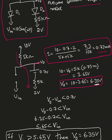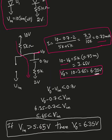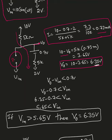Now I need to find the condition — at what input voltage I get this output. Since I assumed D1 is open, the anode voltage condition is: V_out minus V_n must be less than 0.7. Substituting V_out = 6.35 gives 5.65 must be less than V_n. So as long as V_n is greater than 5.65V, the output will be clipped at 6.35 volts.